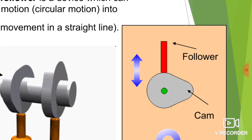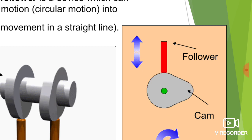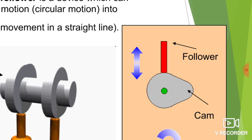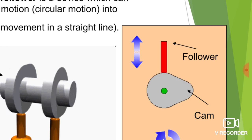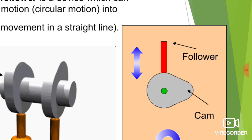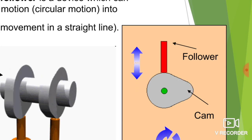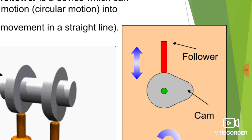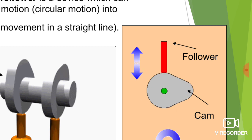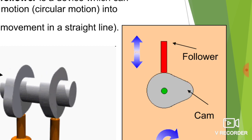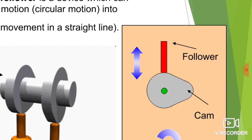As the profile of the cam changes, the motion of the follower will also be affected. So in order to get a desired motion of the follower, we have to design the profile of the cam. The motion of the follower depends on the profile of the cam.